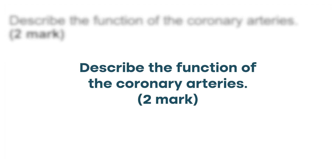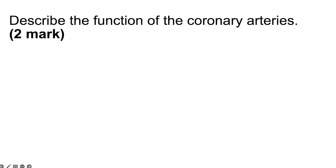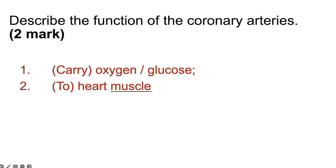For two marks: describe the function of the coronary arteries — the blood vessels on the outside of the heart. As arteries, they carry blood away from the chambers of the heart — specifically from the ventricles — delivering oxygenated blood to the cardiac muscle. One function is to carry oxygen (or glucose) to the heart muscle, providing what the cardiac muscle needs for aerobic respiration so it can continue to contract and relax.